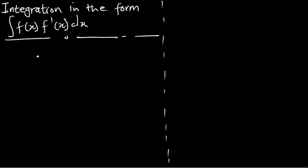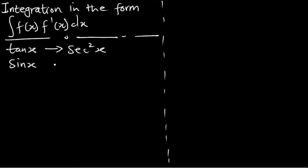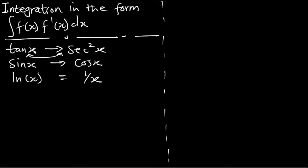Hello, welcome to Instant Mechanics. Today we are going to look at integration in a different form. The form is: integral of a function of x multiplying the derivative of that same function. In the previous episode we saw the integral of a derivative over the original function. Here, what if the function is multiplying its derivative? In a situation where you are to integrate the product of a function and its derivative, there is a special way of doing it.